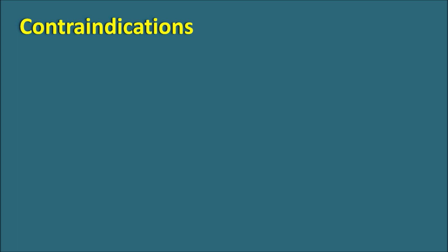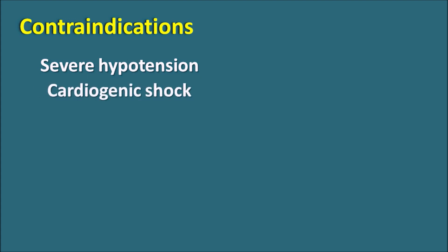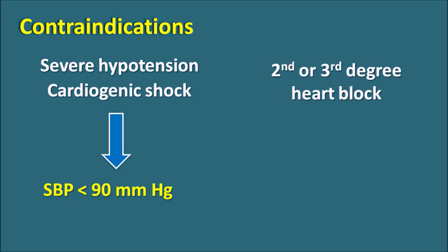What are the contraindications? Verapamil acts as an antiarrhythmic, but it also produces hypotension, so one important contraindication is severe hypotension. In patients with severe hypotension or cardiogenic shock — where the pumping pressure of the heart is already reduced — verapamil is contraindicated, as it can further deteriorate these conditions by reducing blood pressure and force of contraction. Particularly when systolic blood pressure is less than 90 mmHg, verapamil is contraindicated. Similarly, second or third degree heart block is a contraindication: since verapamil decreases AV conduction, it can further impair ventricular function in these patients, potentially leading to death.